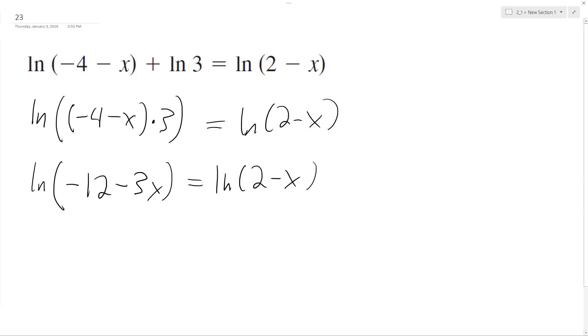We can drop the logarithms now because it's the same on both sides. So negative 12 minus 3x equals 2 minus x. Get all the x's on one side and all the constants on the other.